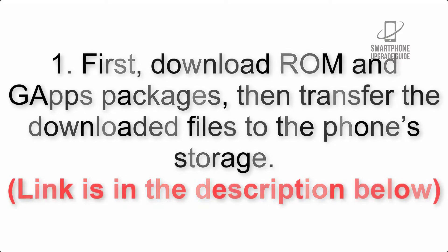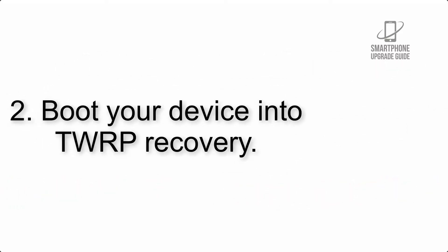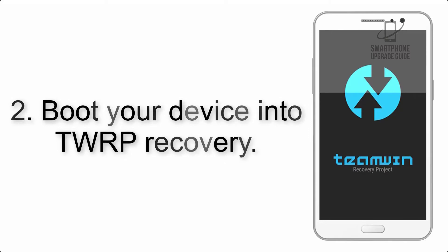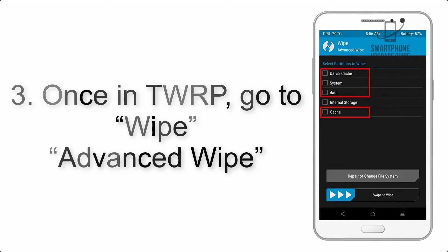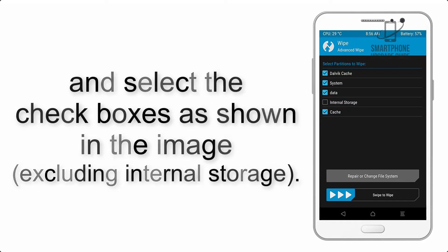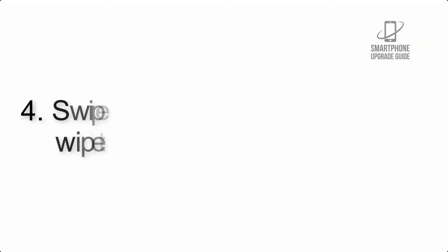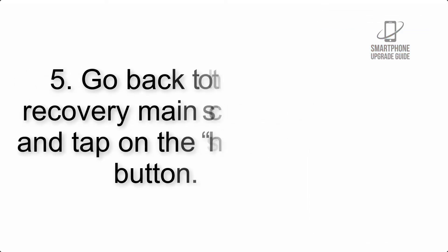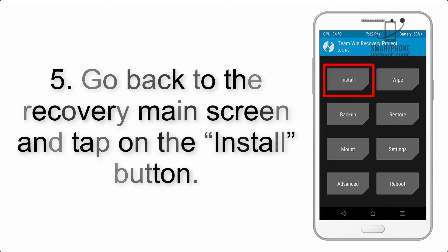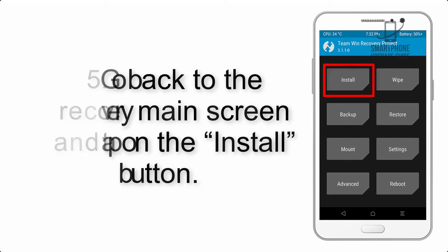Step 2: Boot your device into TWRP recovery. Once in TWRP, click on Wipe, then Advanced Wipe, and select the checkboxes as shown in the image, excluding internal storage. Step 4: Swipe the button to wipe the device. Step 5: Go back to the recovery main screen and tap on the Install button.